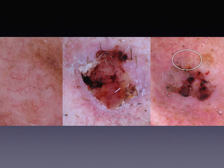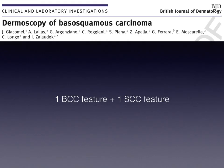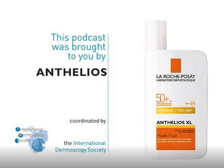In the middle is one more basal squamous carcinoma. We can find SCC clues such as blood in keratin and white circles surrounding follicles in the lower part, but on the upper right we can find linear, arborizing vessels — a clue for basal cell carcinoma. This illustrates the concept that basal squamous carcinoma dermatoscopically displays at least one BCC feature plus at least one SCC feature. Thank you so much for watching this podcast.